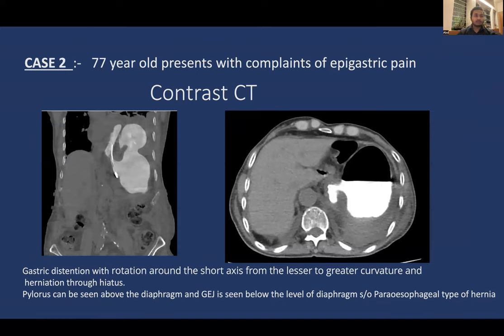Case 4: A 77-year-old male presented with epigastric pain. Contrast CT shows gastric distension with rotation around the short axis from lesser to greater curvature and herniation through the hiatus. The pylorus is seen above the level of the diaphragm while the G-junction is below the diaphragm, suggestive of a paraesophageal type hernia in which only the gastric contents are herniating through the defect.